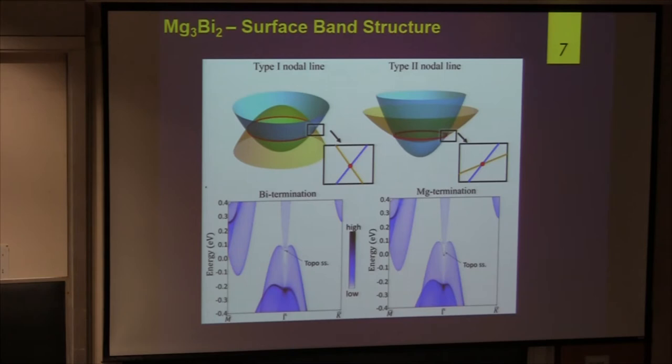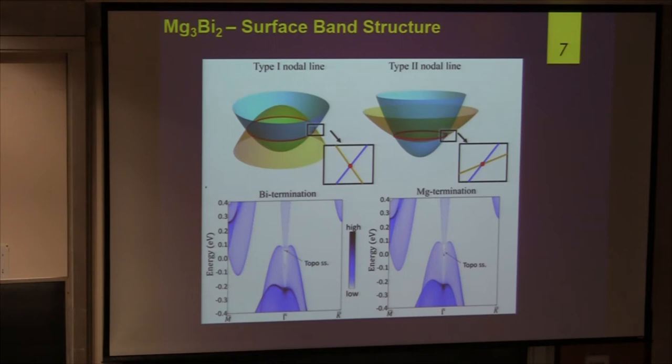What's the meaning of type-1 and type-2 band crossing? If we have a first band and a second band crosses it, there are two ways: one going this way — that's type-1 — and another going this way — that's type-2.